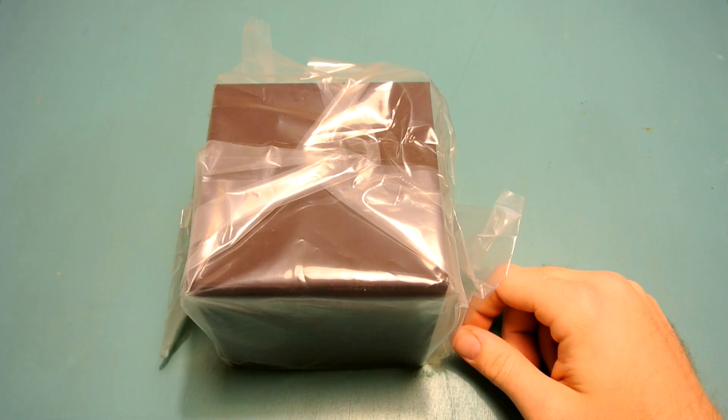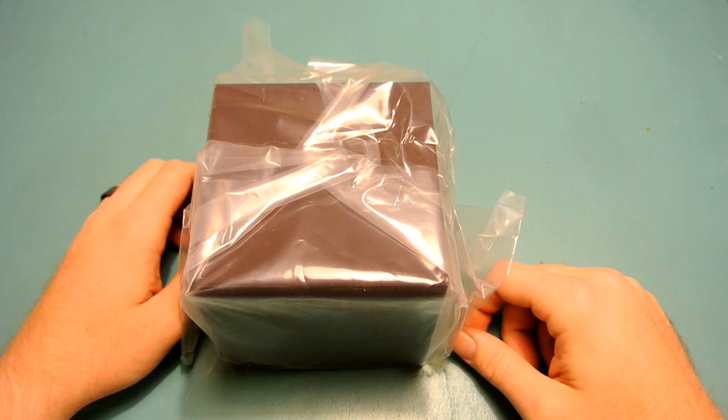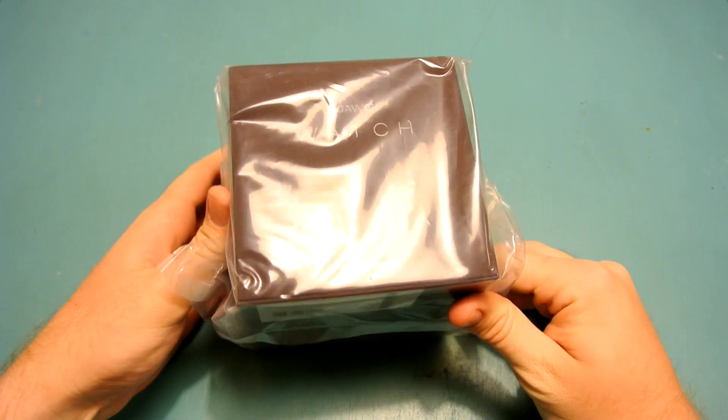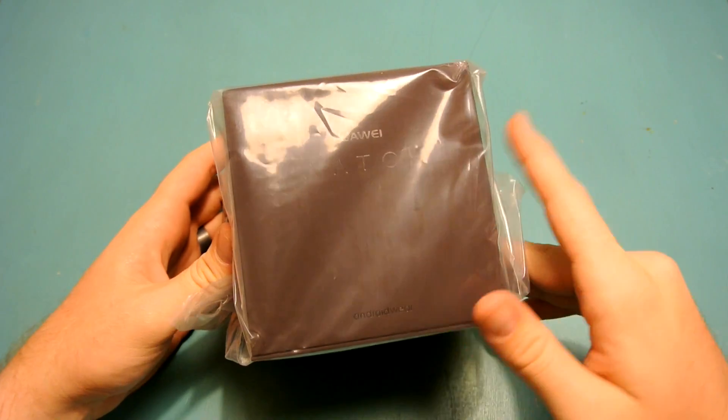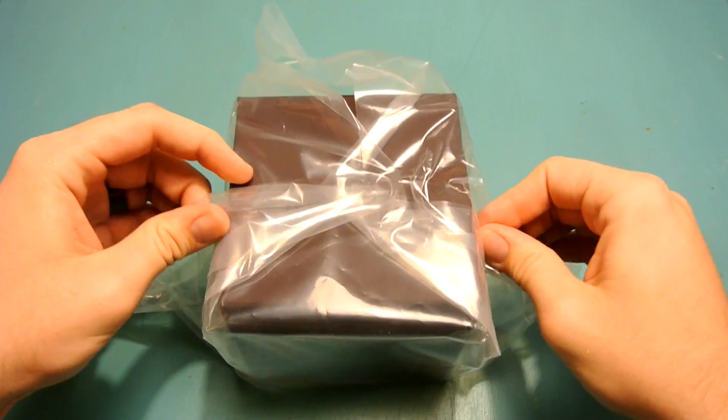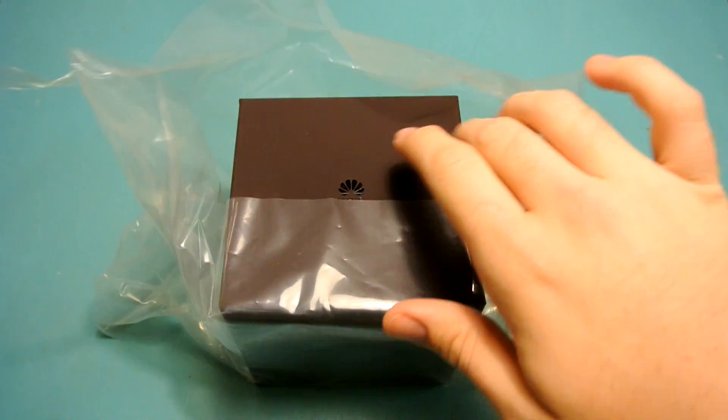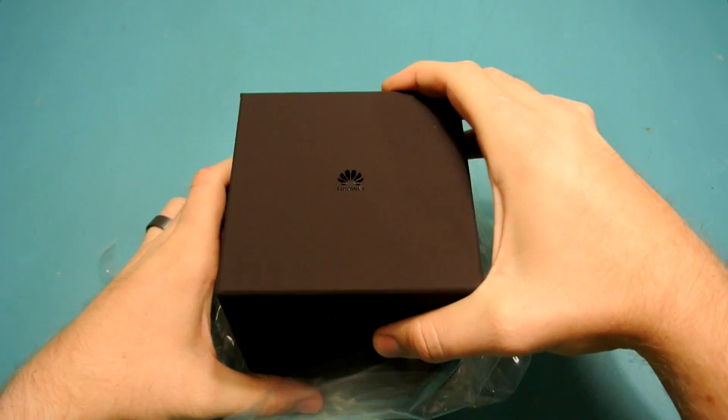What's going on guys, Nathan with TechnologySmash back with another video. Today I have an unboxing of the Huawei Watch. This is an Android Wear watch made by Huawei, who is the same manufacturer as the Nexus 6P. They've made a lot of flagship phones in China and are starting to get more popular here.